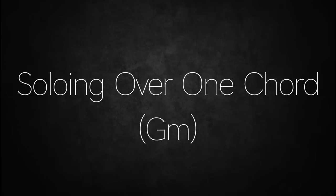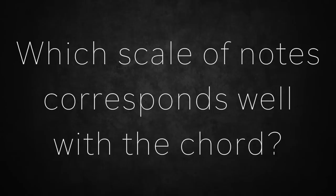I will demonstrate these steps on one chord first, then on two chords, just to make it as clear as possible. Say we're blowing a solo over G minor. The first thing we have to understand about the chord we're playing on is what the chord scale of that chord is — which scale of notes corresponds well with that chord. In the case of G minor, it's G Aeolian.